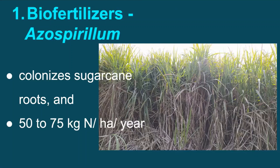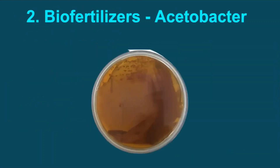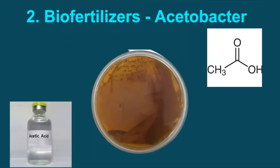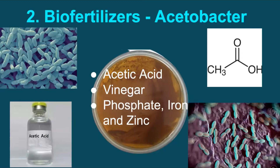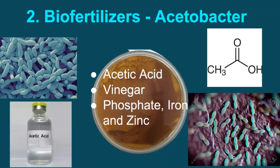In the last few years, another nitrogen-fixing bacteria, acetobacter, is recommended for sugarcane crop as it can fix more nitrogen than azospirillum and has certain other advantages. Acetobacter is also known as acetic acid bacteria and is economically important because it is used in the production of vinegar. Being more efficient, acetobacter colonizes the roots, solubilizes phosphate, iron, and zinc, and survives high sugar concentrations of up to 10% in the soil.